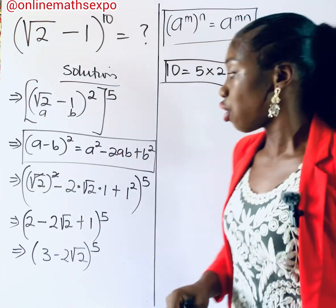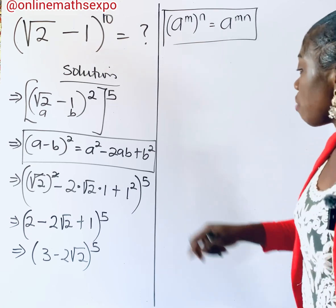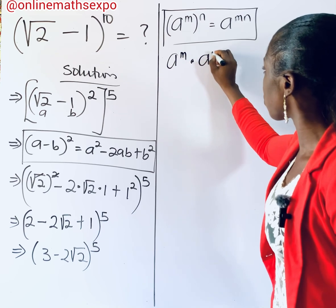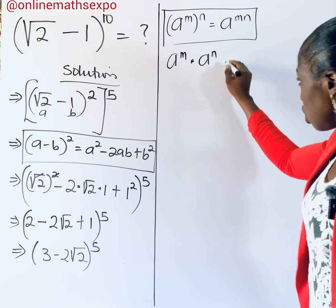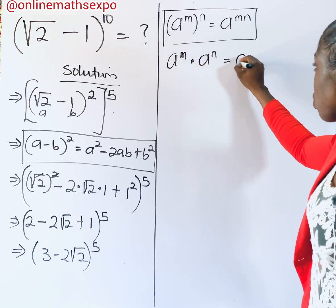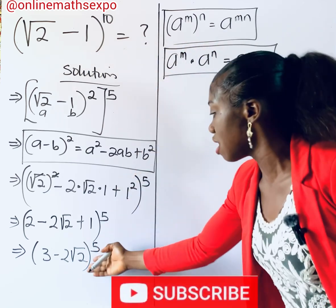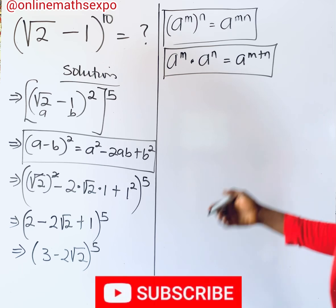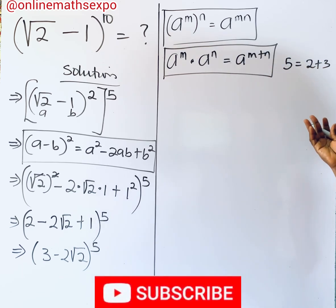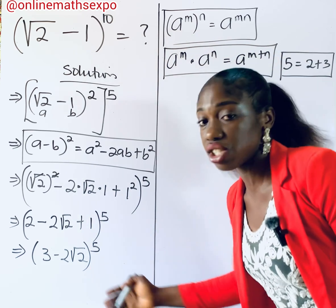Now, how do we simplify this power of 5? Let me remind you of the exponent rule which says a^m multiplied by a^m — provided the bases are the same — means you add the powers, giving a^(m+n). We also know that 5 is the same thing as 2 plus 3, and we are going to use that for easy simplification.